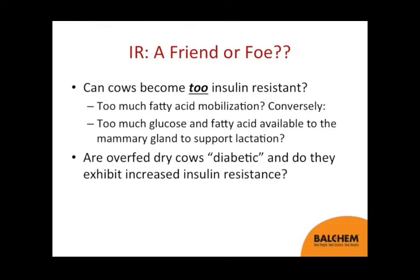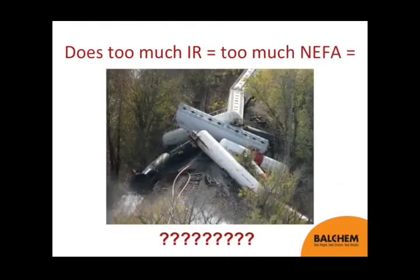Another question we'll talk about today: are overfed dry cows diabetic? The analogy has been made that they're like a type 2 diabetic — they have increased insulin resistance and maybe they mobilize too much fatty acid. Does too much insulin resistance equal too much NEFA and result in a train wreck?